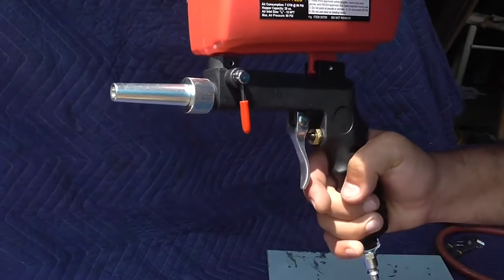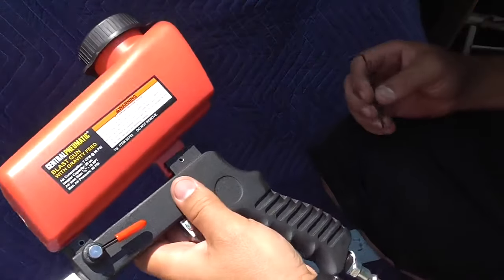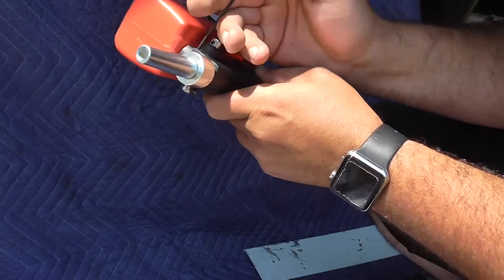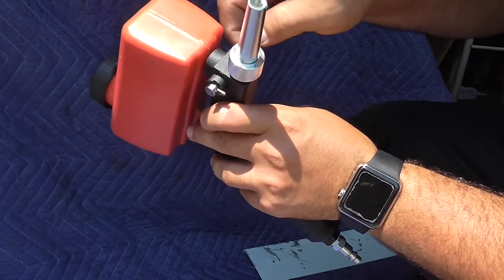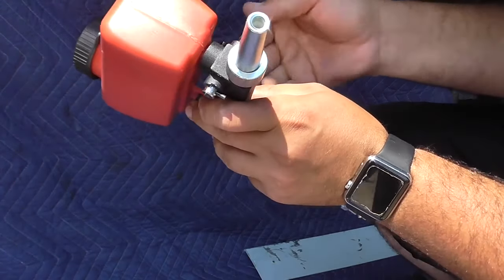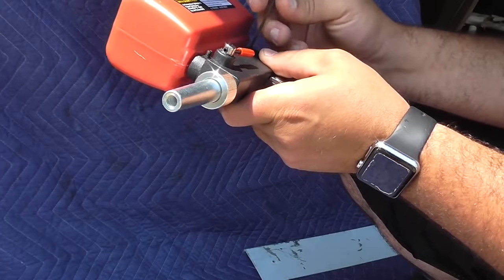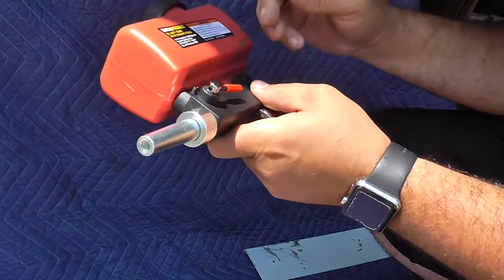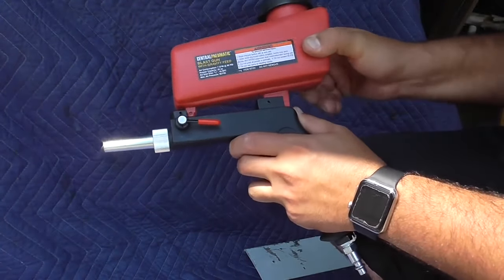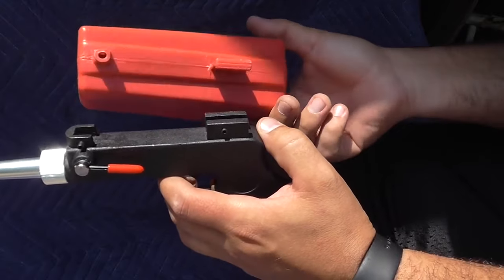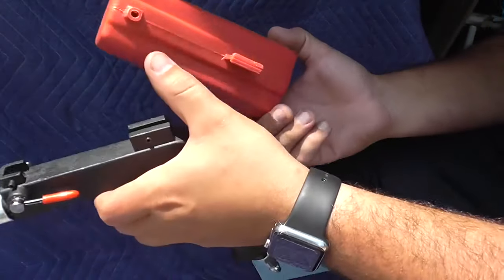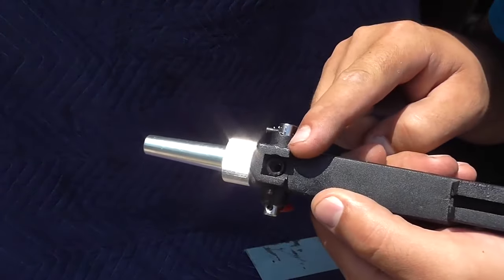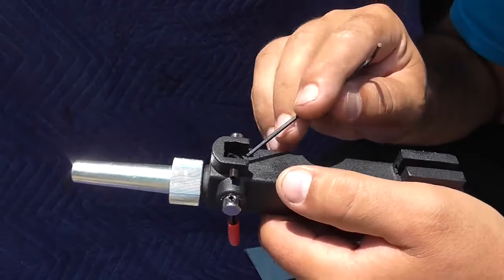Alright, so to take it apart there's two Allen screws right here. We're going to remove them. And the hopper slides right off. There's a hole in there but it looks like it's too small. There's also an o-ring right in there, so we have to take that off.